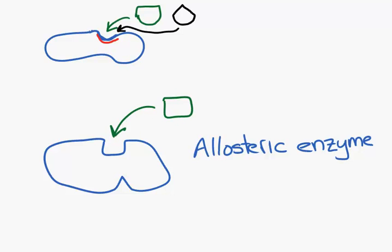However, this time the inhibitor fits another site on the enzyme. Fits it here, and that causes the entire enzyme to change its shape.